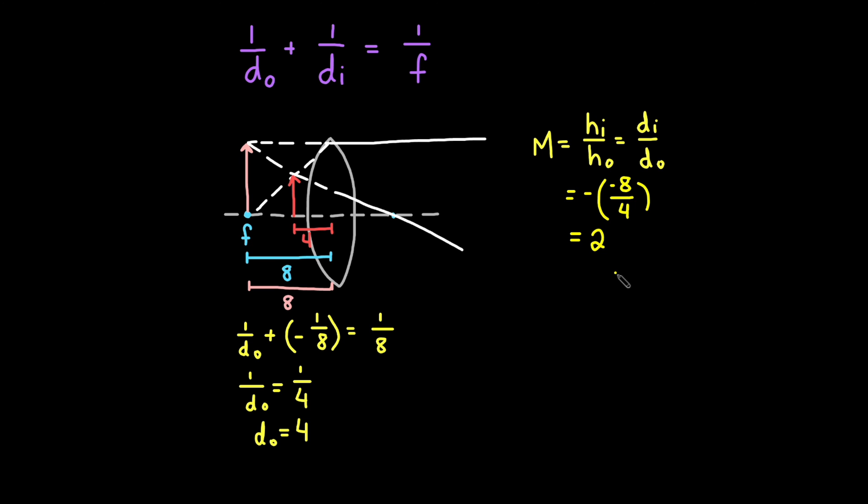This means that the image is twice as large as the object. The magnification is positive, which indicates the image is right side up. If the image has a height of 6 cm, how tall is the object? Since the ratio of the heights is the same as the ratio of the distances, we use the magnification equation to find that the object height is 3 cm.